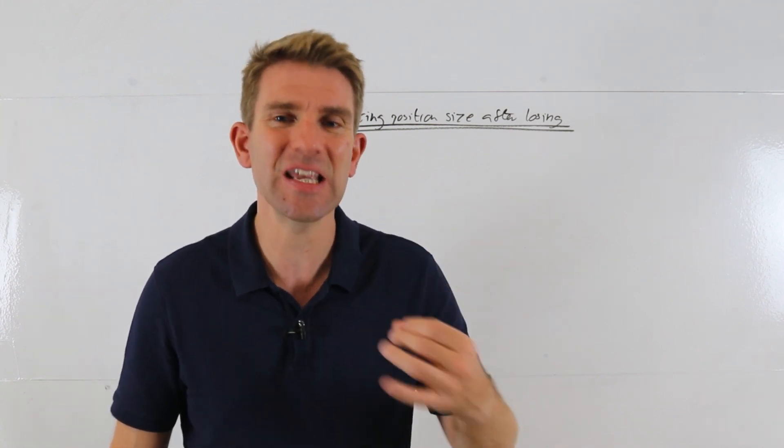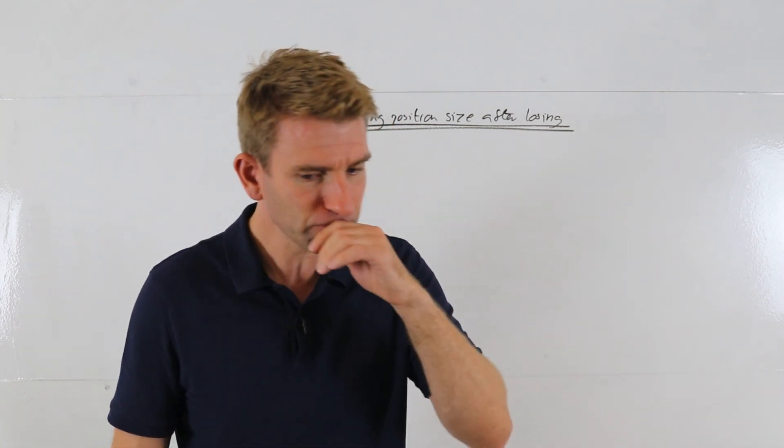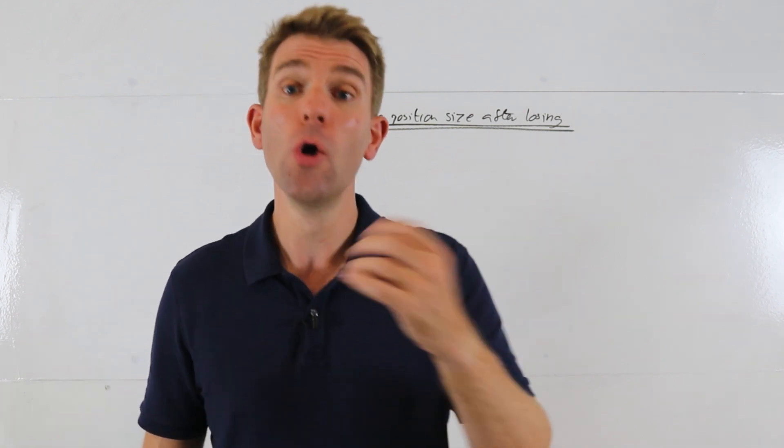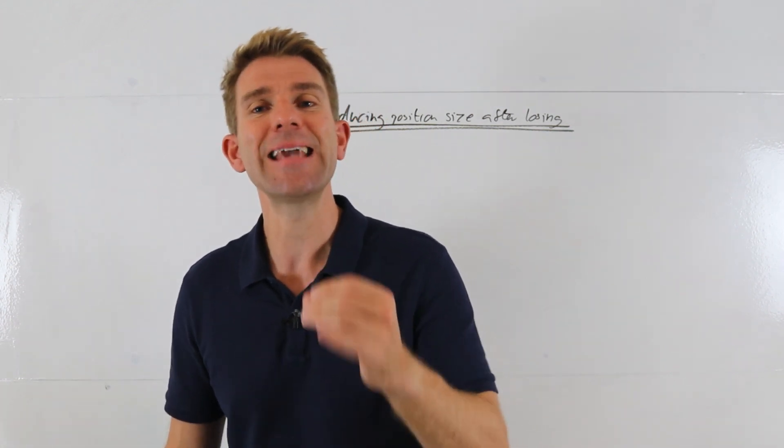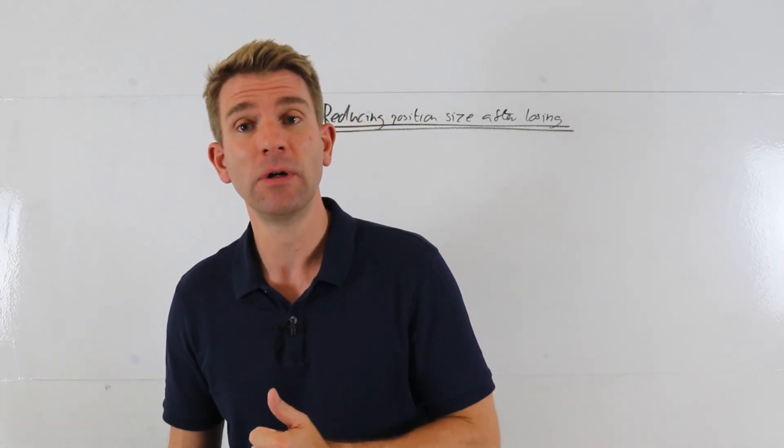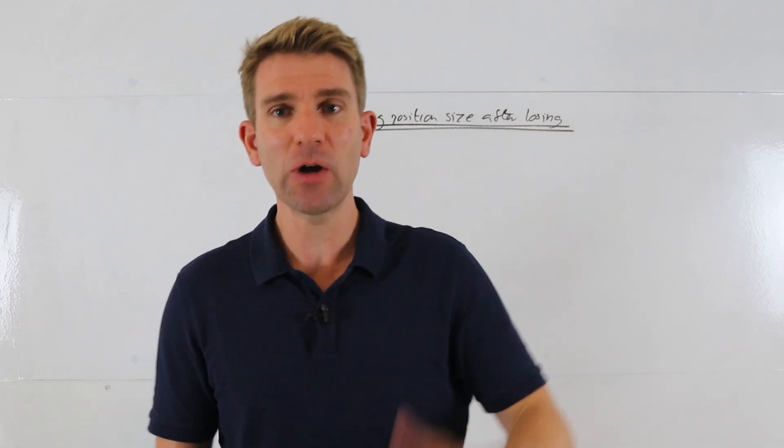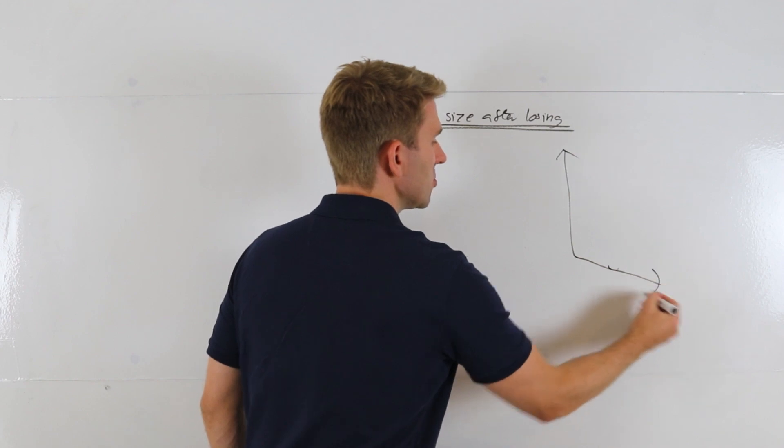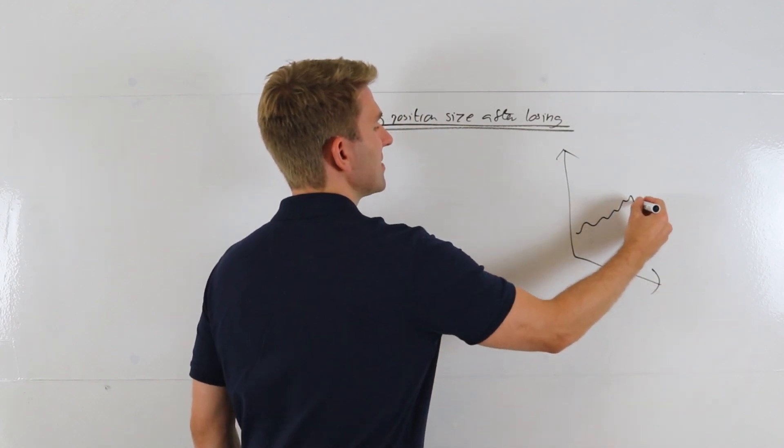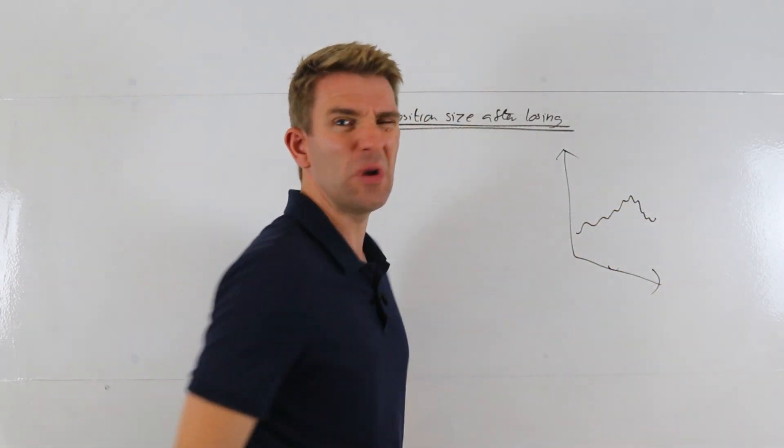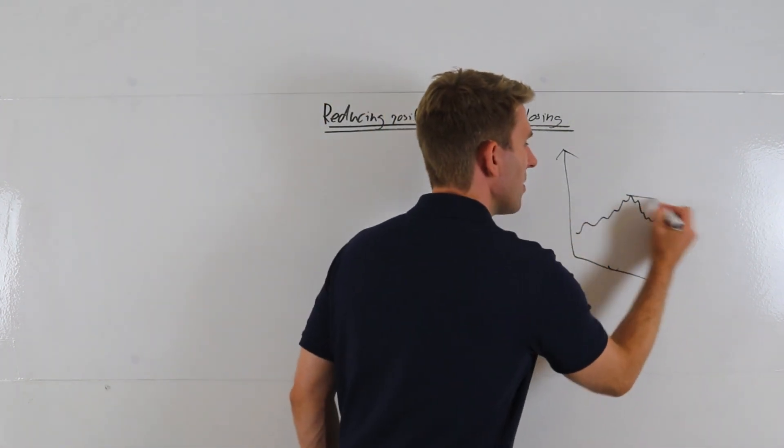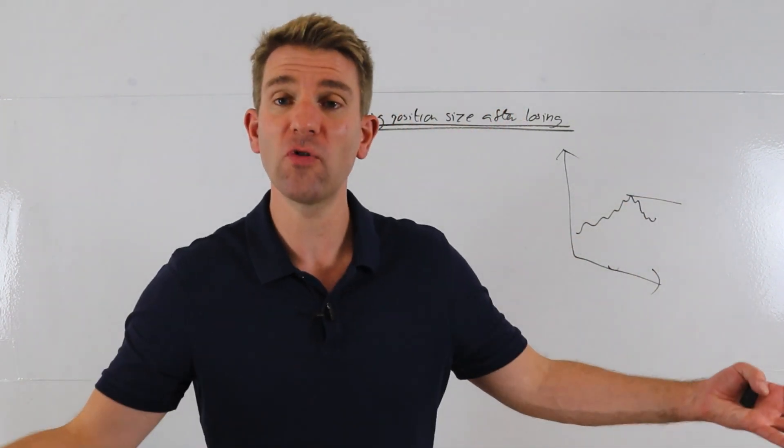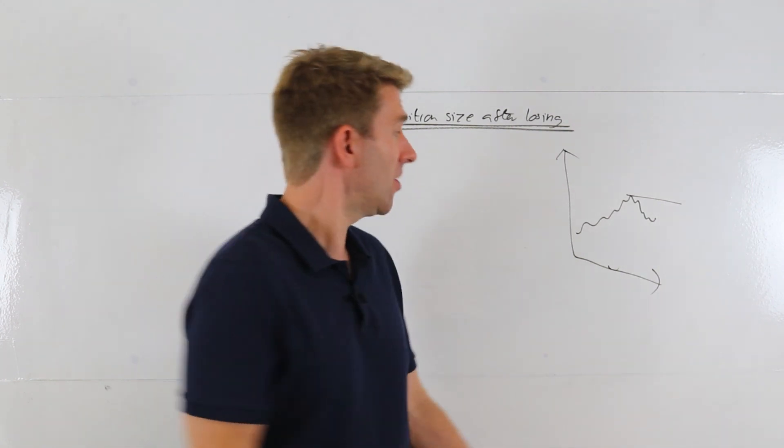And what we all want to do, or most of us want to do, is get that back as quick as possible. We think if we can get our equity curve back, let's just do an equity curve here. So if we can imagine we're swinging along very nice, and then we start to decline a little bit more than we wanted to.